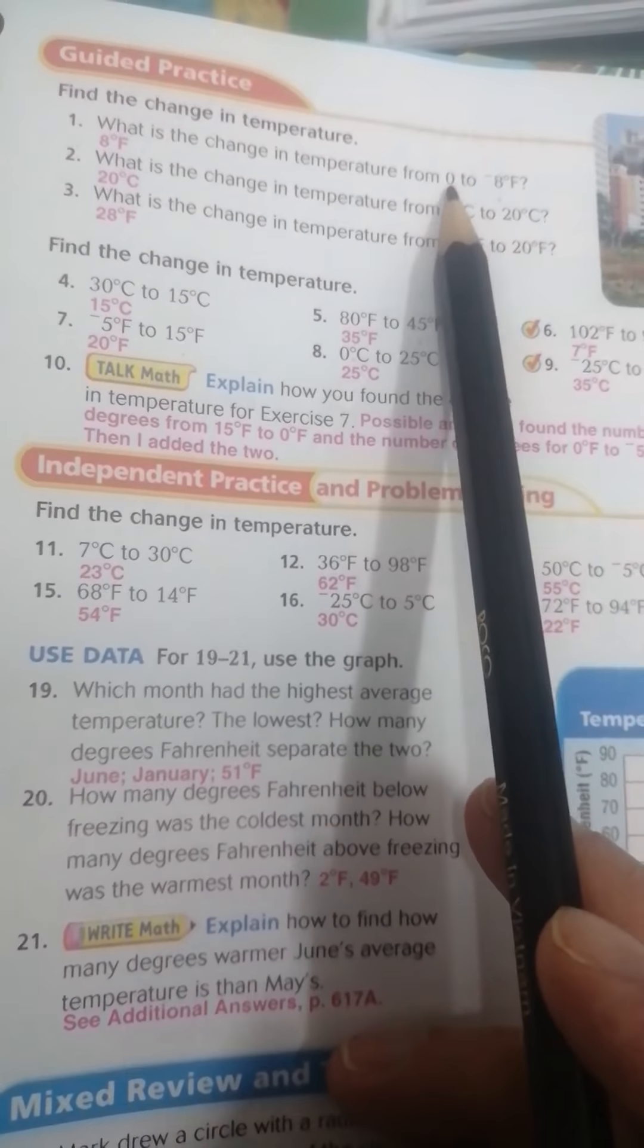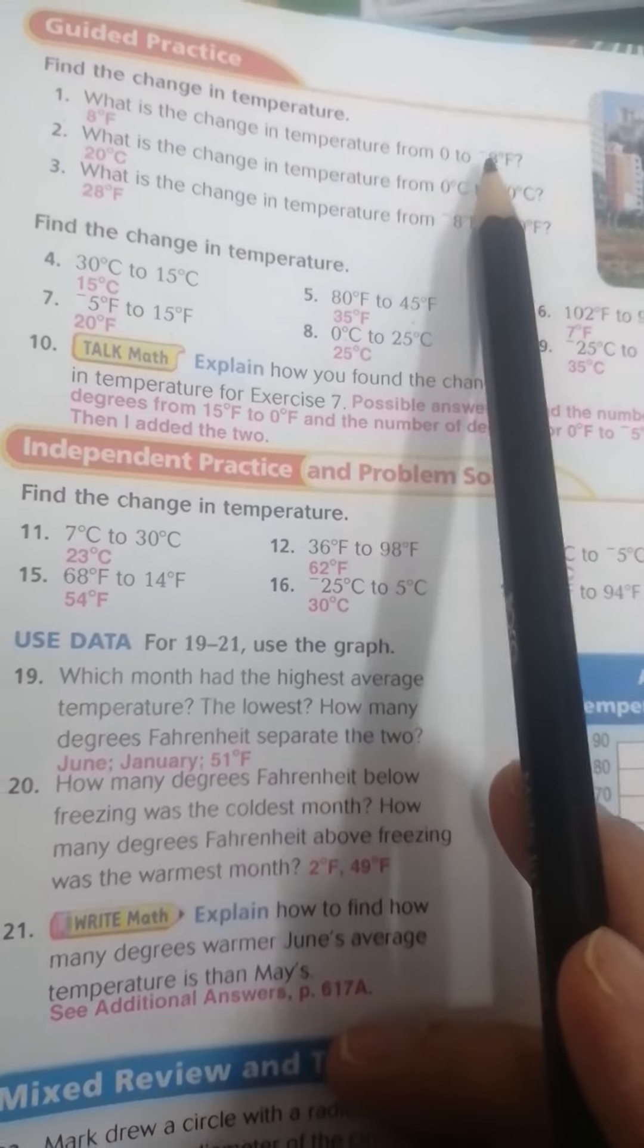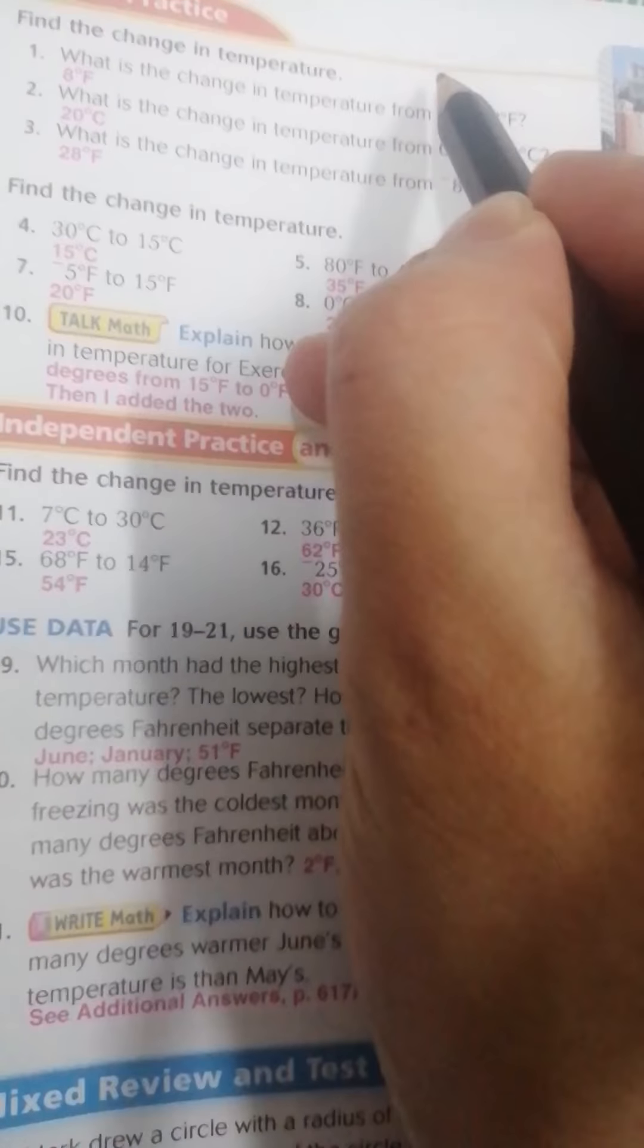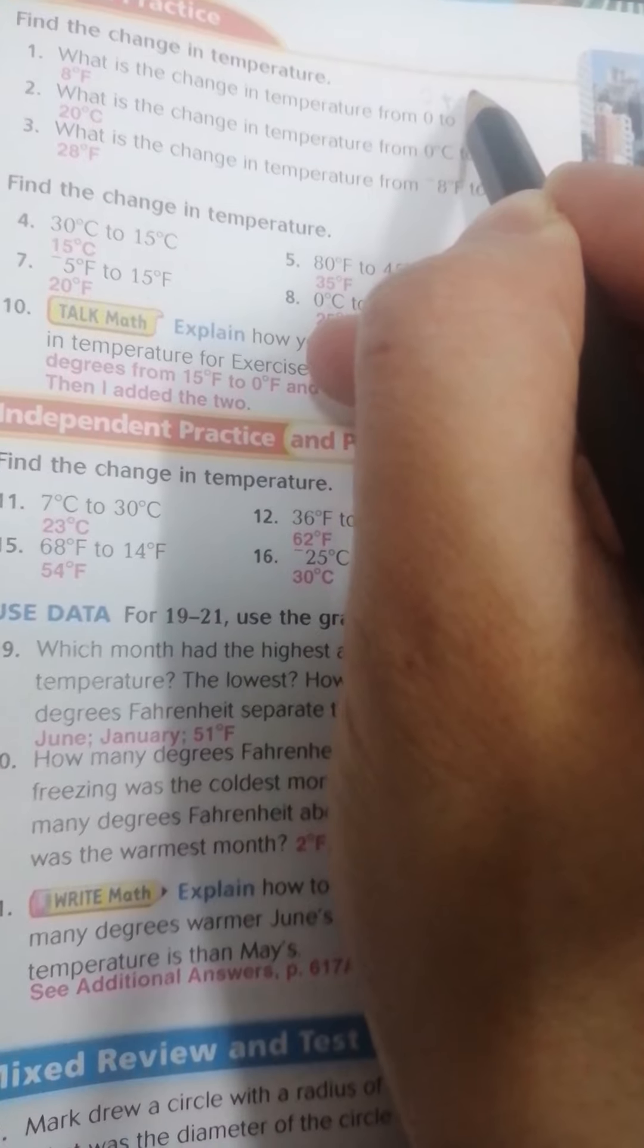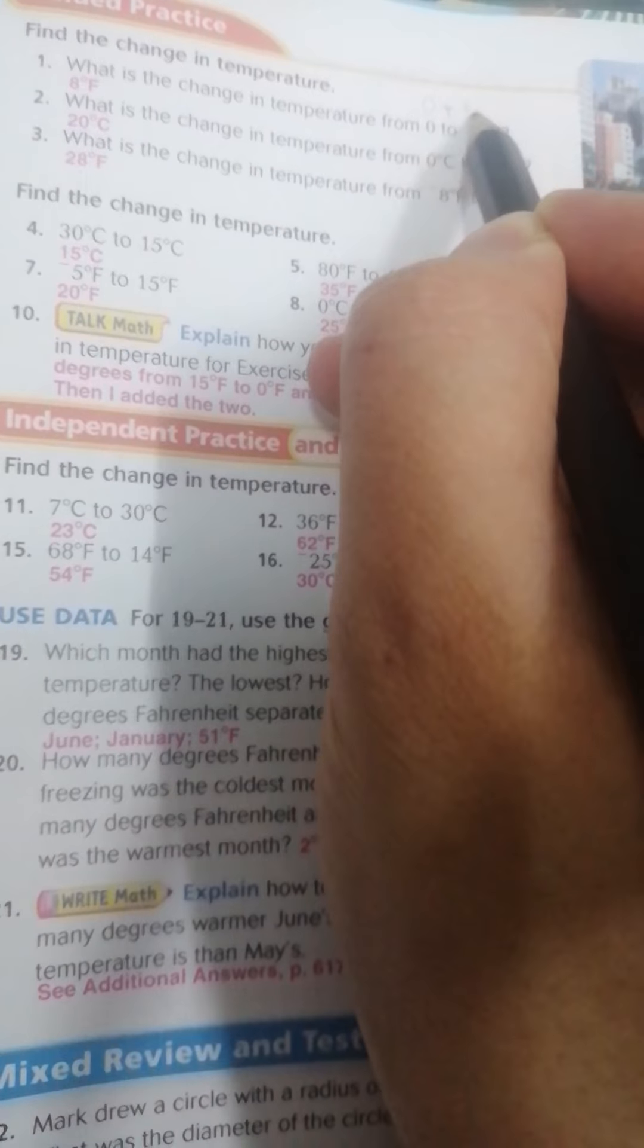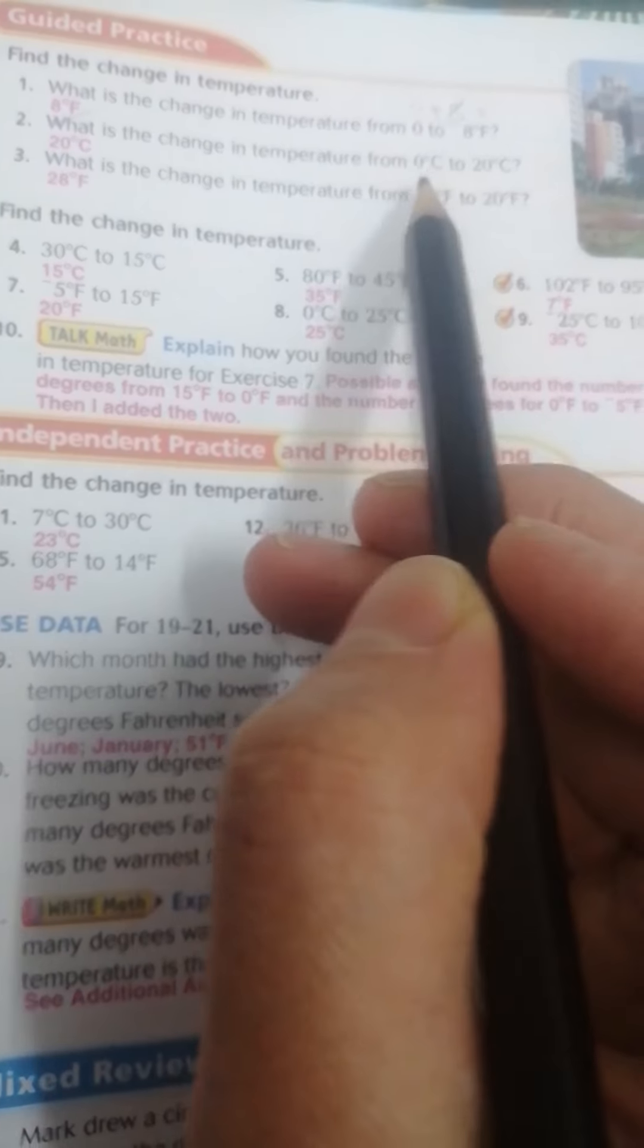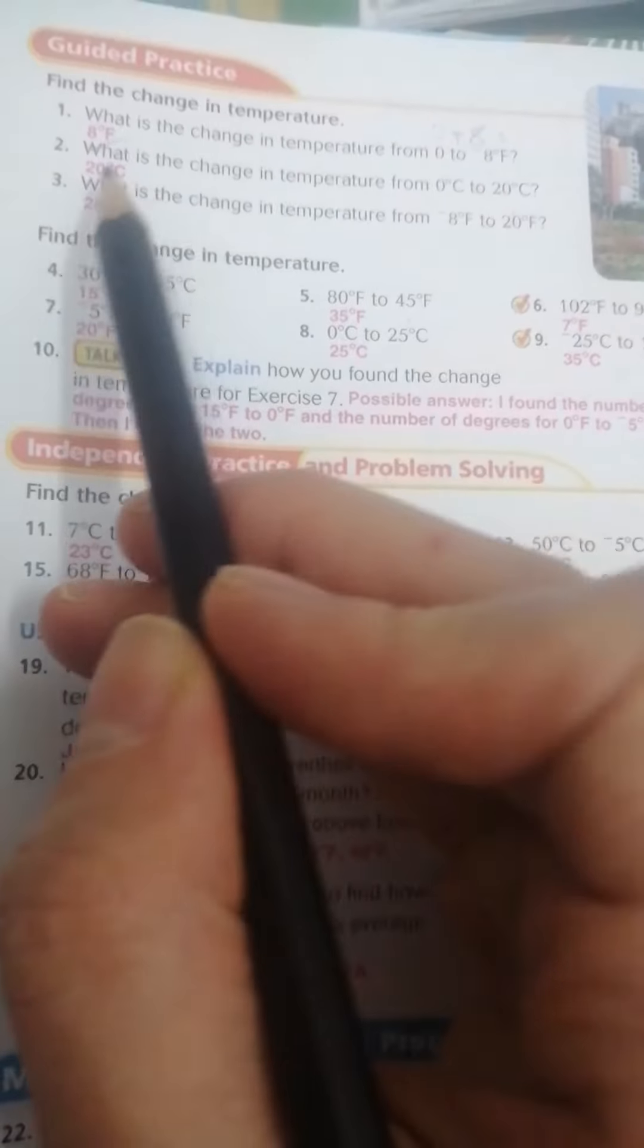Find the change in temperature. What is the change in temperature from 0 to negative 8? Start from 0 to negative. Only make what? Only 0 plus negative. Here, negative 0 plus 8, then equals 8 Fahrenheit.